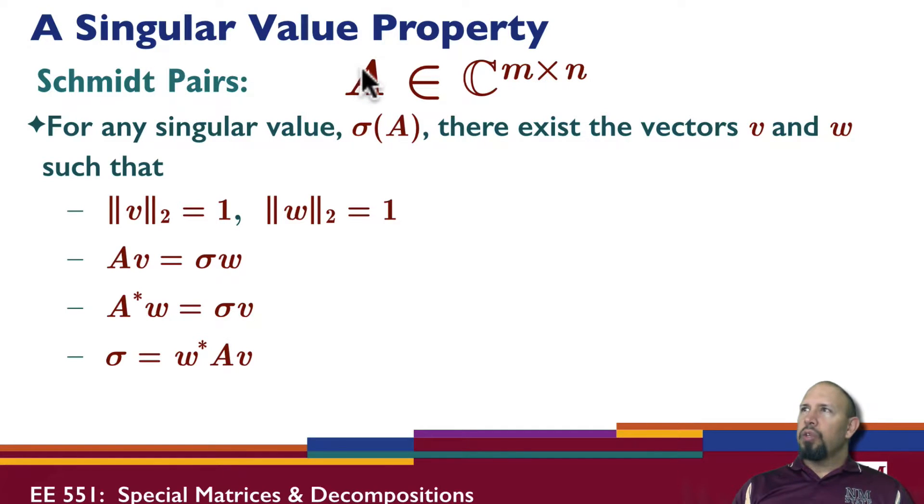One property associated with singular values is something called Schmidt pairs. So again, we have our matrix is M by N. For any singular value, there exist vectors V and W, both of which have unit norms, where AV is equal to sigma times W, A adjoint W is equal to sigma times V, and sigma is equal to W adjoint AV. So I can think of this in terms of V being a right singular vector and W being a left singular vector.